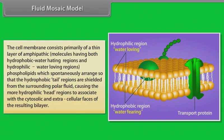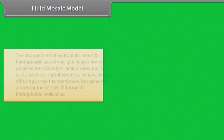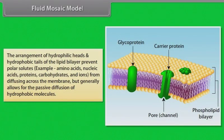The cell membrane consists primarily of a thin layer of amphipathic molecules having both hydrophobic (water-hating) and hydrophilic (water-loving) regions. Phospholipids spontaneously arrange so that the hydrophobic tail regions are shielded from the surrounding polar fluid, causing the more hydrophilic head regions to associate with the cytosolic and extracellular phases of the resulting bilayer. This arrangement prevents polar solutes — such as amino acids, nucleic acids, proteins, carbohydrates and ions — from diffusing across the membrane, but generally allows passive diffusion of hydrophobic molecules.